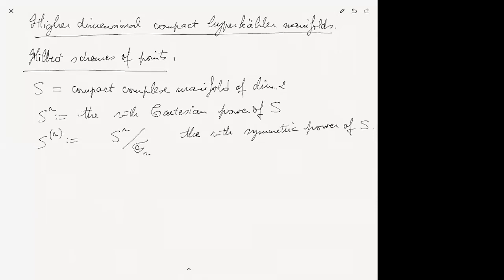The action of the symmetric group is by permuting the factors of S^r. You can naturally think of the symmetric power as effective zero-cycles on your surface — so S^(r) can also be thought of as effective zero-cycles.